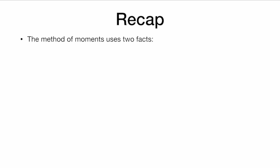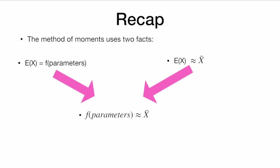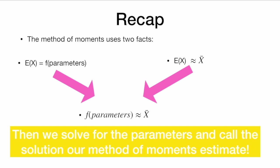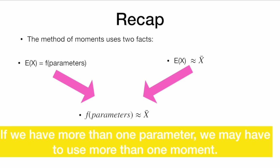To recap, the method of moments uses two facts: that we can express E[X] in terms of the parameters we want to learn about, and that the sample moments are approximately equal to the population moments — that the average of X in our sample is probably close to the average of X in the population. We combine these facts to express the sample mean as a function of the parameters and solve for the parameters; we call the solution our method of moments estimate. If we have more than one parameter, we may have to use more than one moment, as we saw with the uniform distribution on a to b.